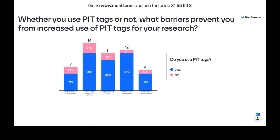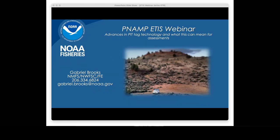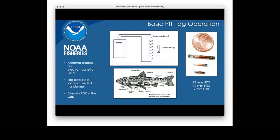Welcome. My name is Gabriel Brooks, I work for NOAA's National Marine Fisheries Service out of the Seattle office. For those of you who don't use PIT tags, I'm going to give you a quick explanation of how they work. You can see the image there on the right with three PIT tags shown relative to the size of a penny. The top one is a 23 millimeter half-duplex tag, the center one is a 12 millimeter full-duplex tag — the most common tag used in the Columbia basin — and below that is the nine millimeter full-duplex tag.